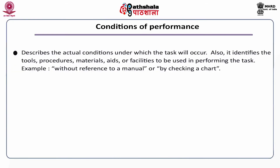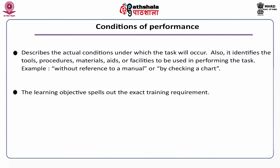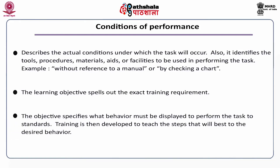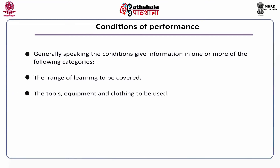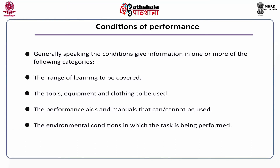Conditions of performance: it describes the actual conditions under which the task will occur, and identifies the tools, procedures, materials, aids or facilities to be used in performing the task — for example, without reference to a manual, or by checking a chart. The learning objective spells out the exact training requirement and specifies what behavior must be displayed to perform the task to standards. Generally speaking, the conditions give information in one or more of the following categories: the range of learning to be covered; the tools, equipment and clothing to be used; the performance aids and manuals that can or cannot be used; the environmental conditions in which the task is being performed; and any special physical or social demands.